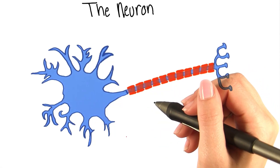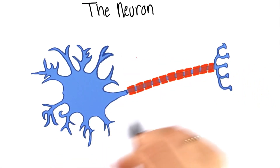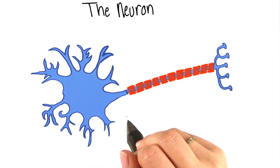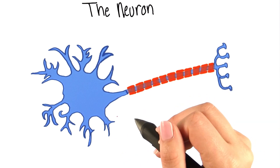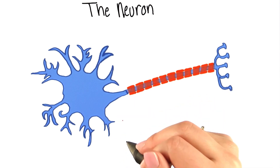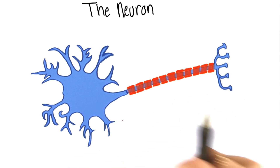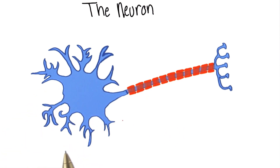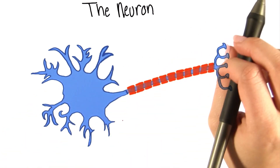So how does a neuron work? To answer that, we first need to know the different parts of the neuron, because each has a different function. Then we can take a more detailed look at precisely how the neuron fires, which is what we call an action potential.